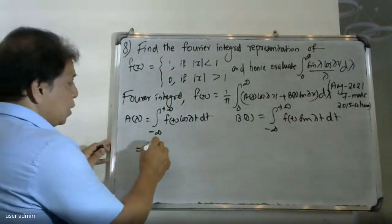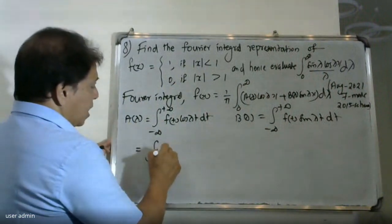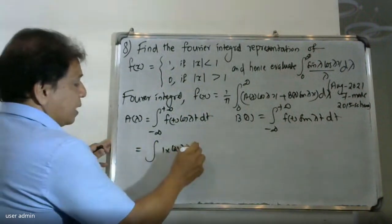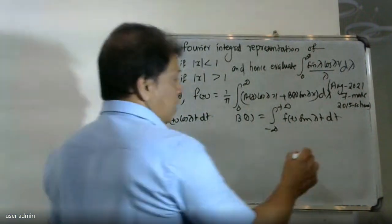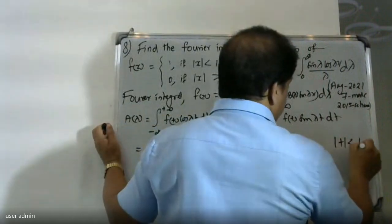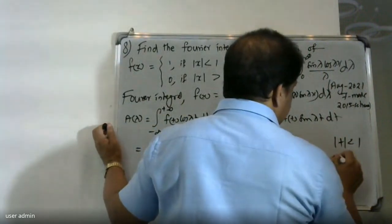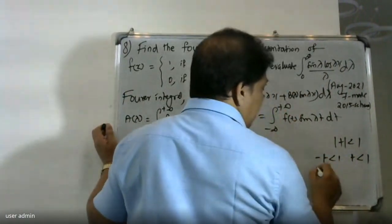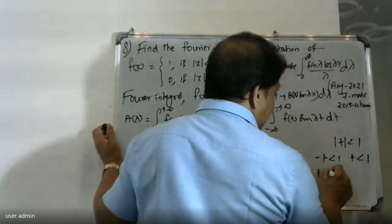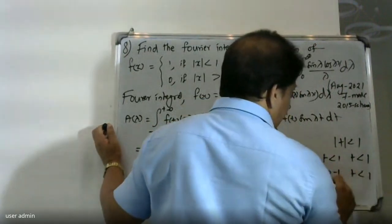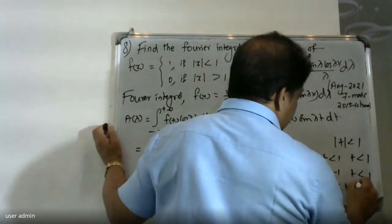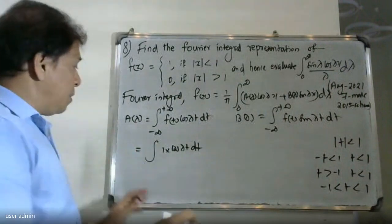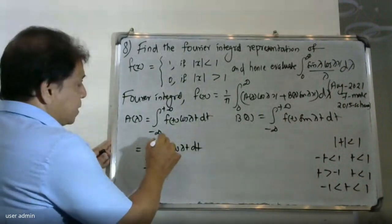For f(t) equal to 1, we compute the integral with cos(lambda t). The condition |t| less than 1 means t lies between minus one and plus one, so t is in the interval (minus one, plus one).